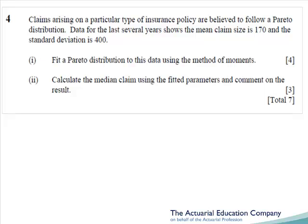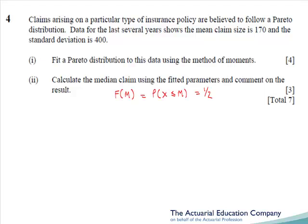Question 4 involves fitting a Pareto distribution using the method of moments. A Pareto distribution has two unknowns, alpha and lambda, and so we will need two equations — we simply equate the sample and model means and the sample and model variances. This is a very common question and should have presented no problems at all. In the second part we need to calculate the median, i.e. the value of m which is halfway through the distribution. All we have to do is use the CDF from the tables and rearrange it.